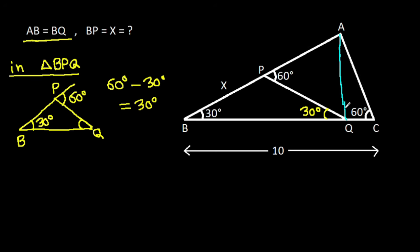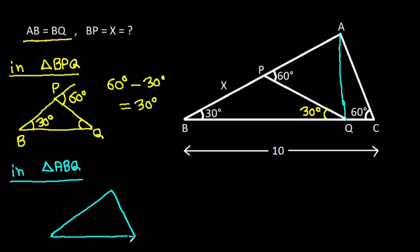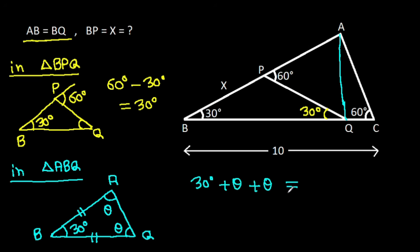And if we join AQ, then in triangle ABQ, we have AB is equal to BQ, that means these two angles will be equal — suppose theta — and this angle is 30 degrees. So, 30 degrees plus theta plus theta will be 180 degrees, and 2 theta will be 150 degrees. So theta will be 75 degrees.